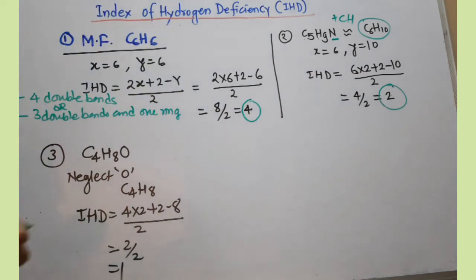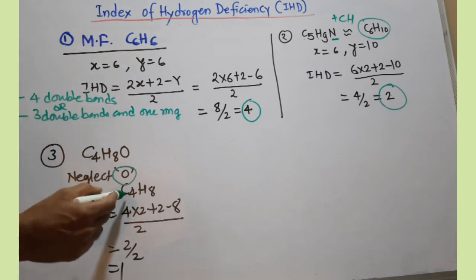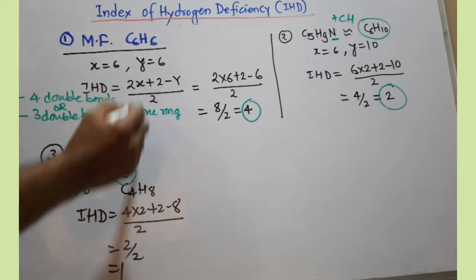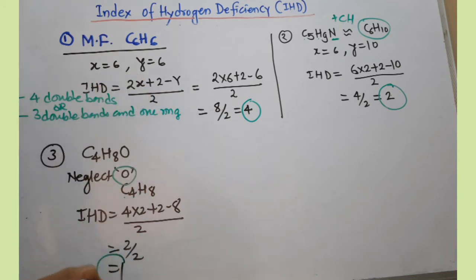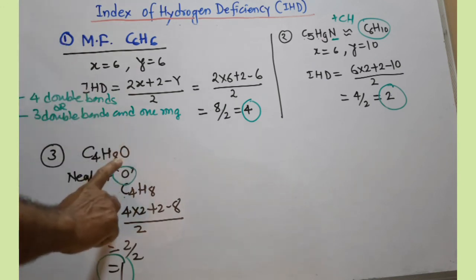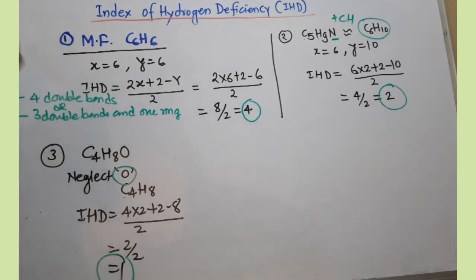If oxygen is there, you just neglect that oxygen, and the new formula will be C4H8. Put the value of x and y in this formula. By putting this value, we will get IHD one. And one IHD means either having one double bond or having one ring.